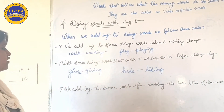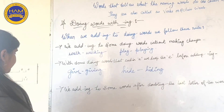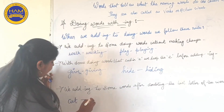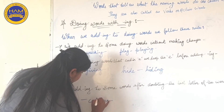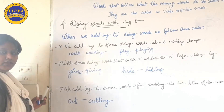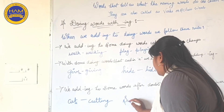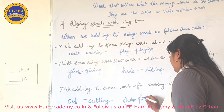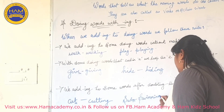Rule three: we add -ing to some words after doubling the last letter of the word. For example, 'cut' becomes 'cutting' — we double the last letter 't', giving c-u-t-t-i-n-g. And 'swim' becomes 'swimming' — we double the last letter 'm', giving s-w-i-m-m-i-n-g.